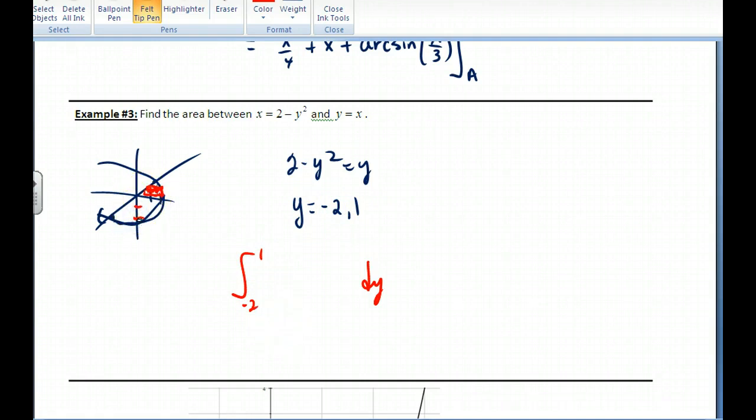So down here, this is negative 2. And then up here, this is 1. And so now with this, I take the right minus the left. And so I have my right curve, which is the parabola, and minus my left curve. And so I have this set up here.